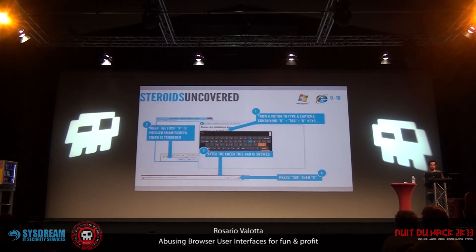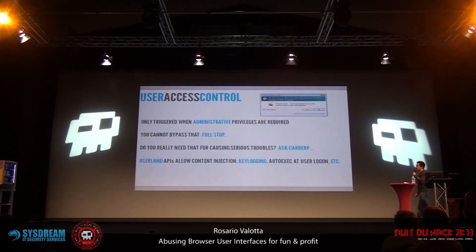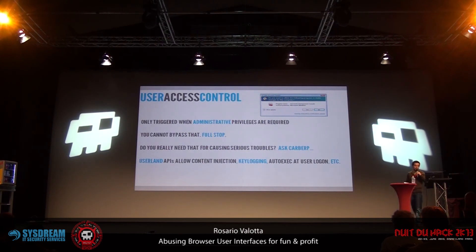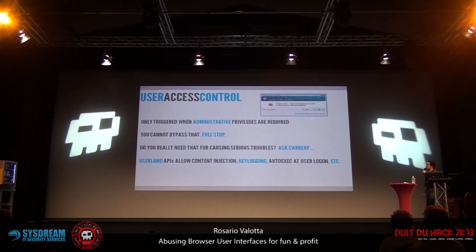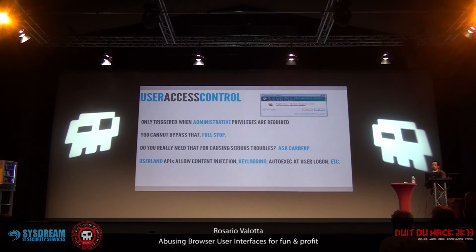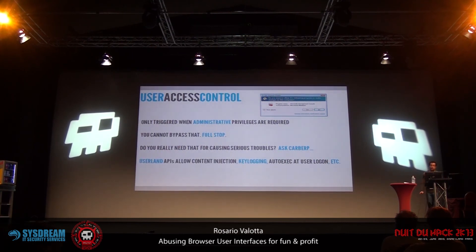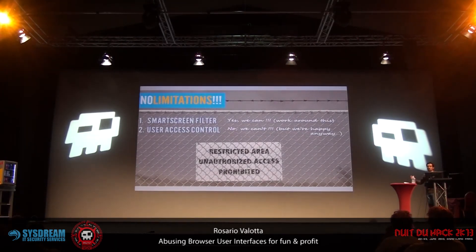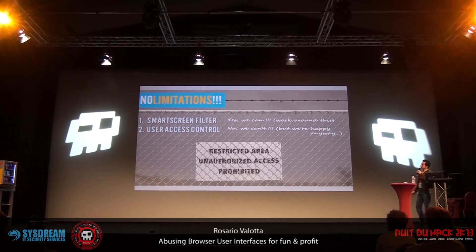The second limitation is User Access Control, a security technology introduced in Windows Vista that triggers a popup every time administrative privileges are required. But the question is: do you really need administrative privileges to cause serious trouble? The first version of Zeus malware worked completely in user land, and using user-land APIs was able to do very bad things — content injection, key logging, auto-execution, user logon, and so on. So at the end of the day, we have no real limitations, because we can work around Smart Screen Filter and User Access Control is not a problem.